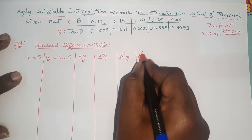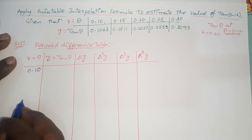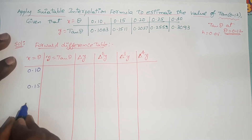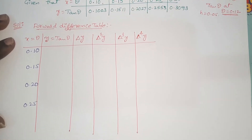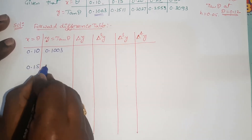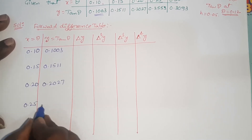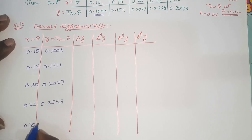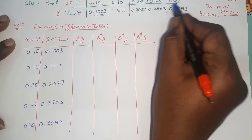Now write the data values: x goes from 0.10 to 0.30. The corresponding y values — that is tan(theta) — are 0.1003, 0.1511, 0.2027, 0.2553, and finally 0.3093, which is the value of y at theta = 0.30.